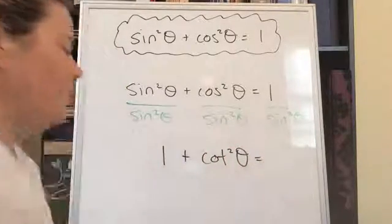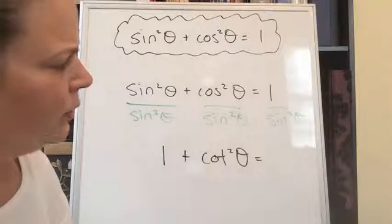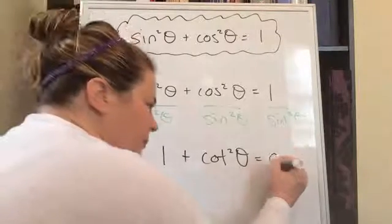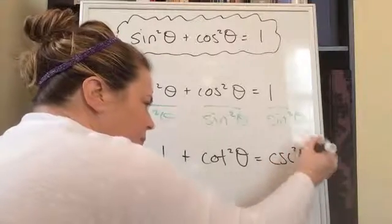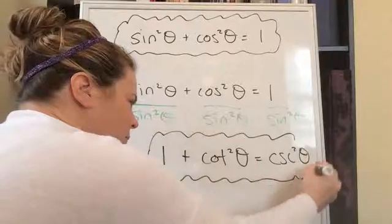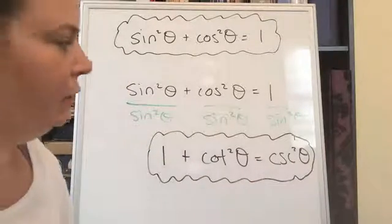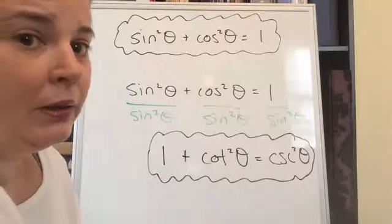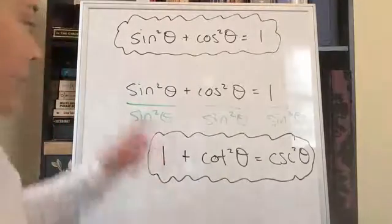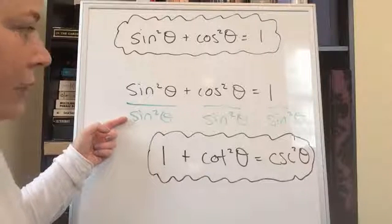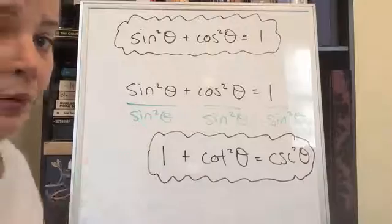Cotangent, and what is one over sine squared? The reciprocal of sine is cosecant. So there's another identity you should know, and that's based on sine squared plus cosine squared equals one. I don't have this one memorized. I always have to derive it by dividing everything by sine squared. Okay.